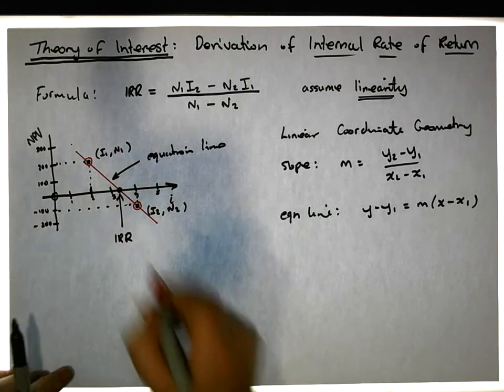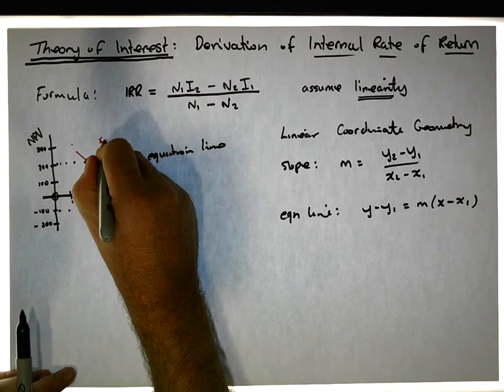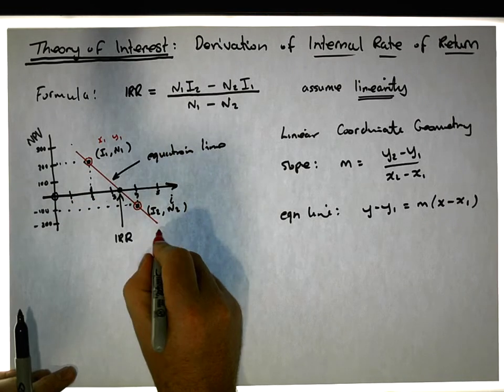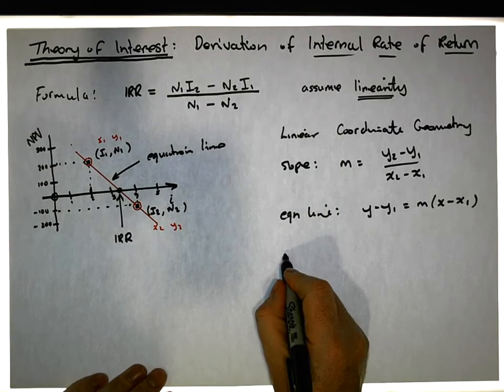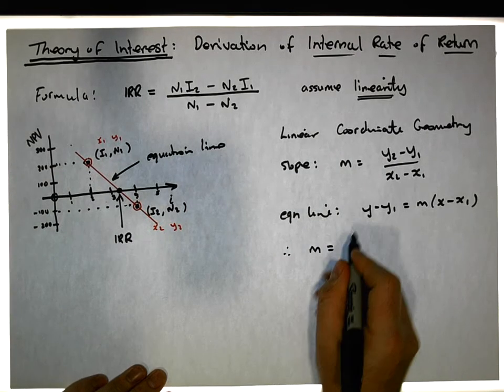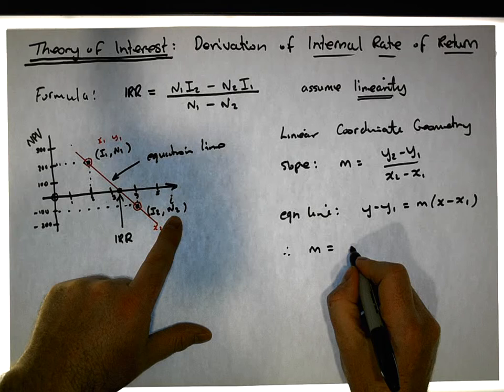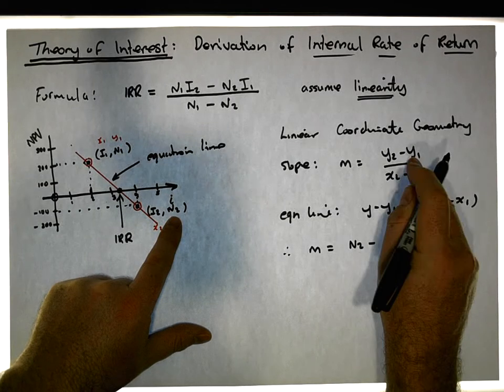So our slope now, it doesn't matter which point we choose. Let's just assume that this is x1, y1 here. Let's assume that the second calculation is x2, y2.